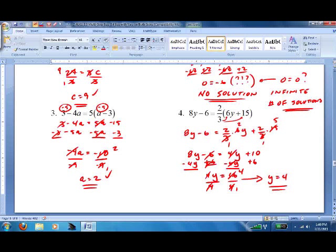Check it. 8 times 4 is 32, minus 6, that's 26. 6 times 4 is 24 plus 15. Yes, I'm using my calculator. 39 times 2 divided by 3 is 26. Never a bad idea to use your calculator. Check.